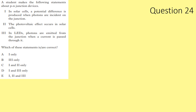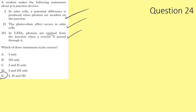Question 24. Statements about P-N junctions: In solar cells, a potential difference is produced when photons are incident on the junction — yes, the photovoltaic effect. In LEDs, photons are emitted from the junction when current passes through — yes. All three statements are correct.